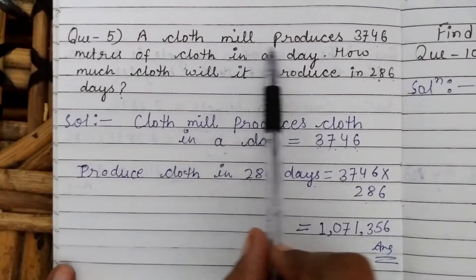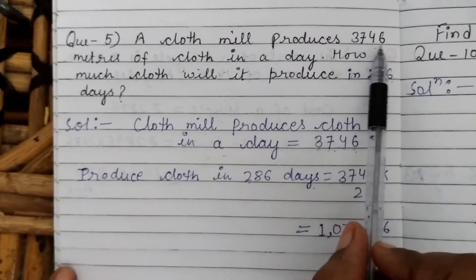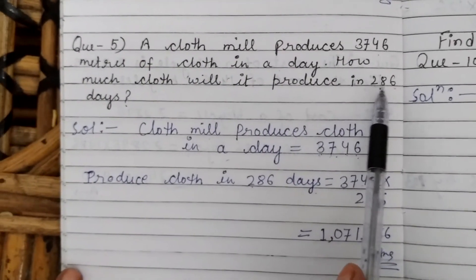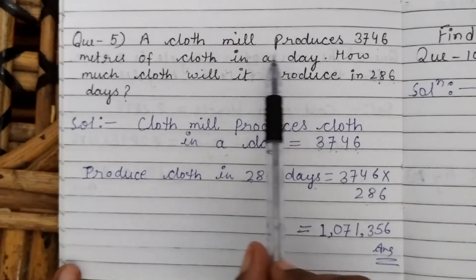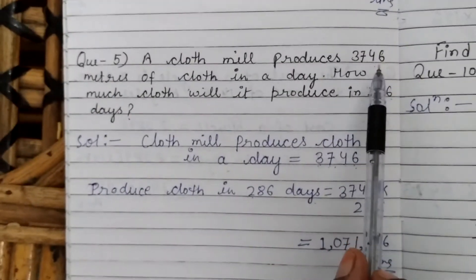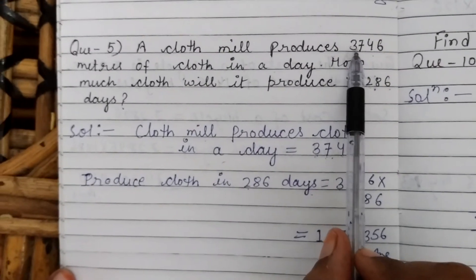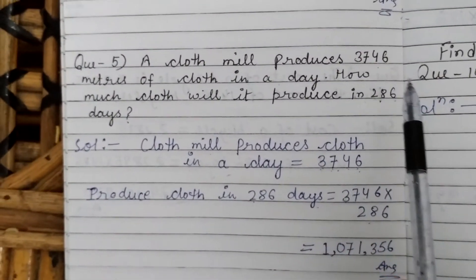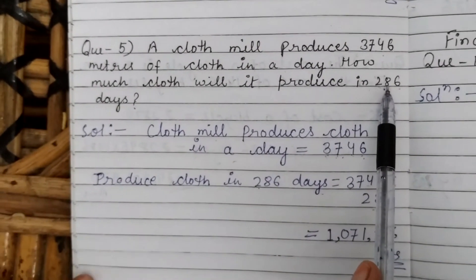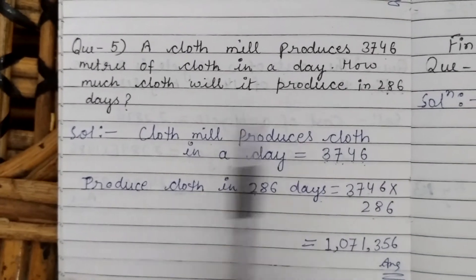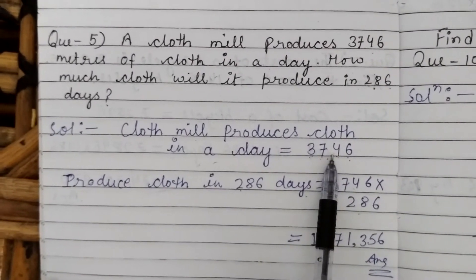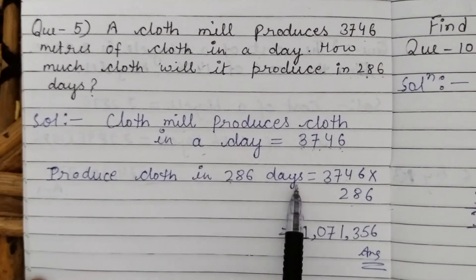Next question: a cloth mill produces 3,743 metres of cloth in a day. How much cloth will it produce in 286 days? So the cloth mill produces 3,743 metres per day, and we need to find how many metres it will produce in 286 days.